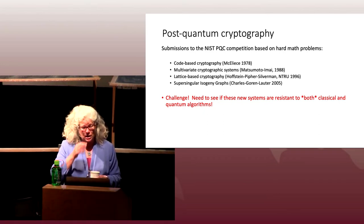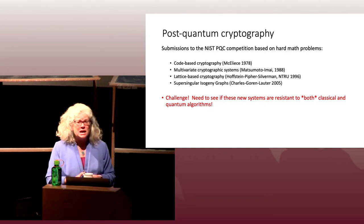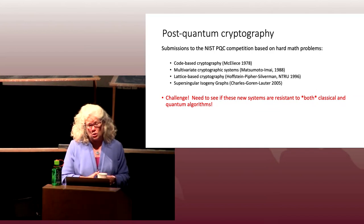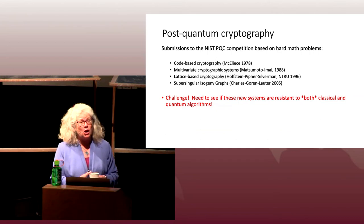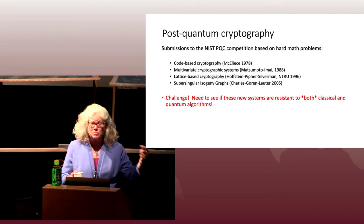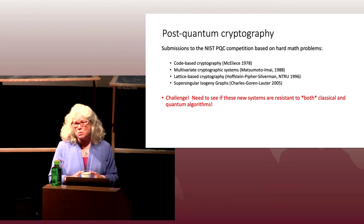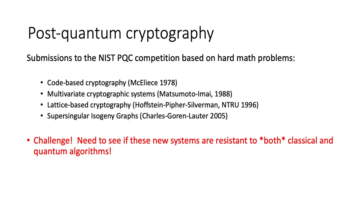One area considered very favorably was code-based cryptography, proposed first in 1978 by McEliece. You can create cryptosystems from error-correcting codes; the security is based on the hardness of decoding random linear codes — analogous to factoring being hard for RSA. There's an extra assumption as well: that you can disguise structured linear codes as random linear codes in a way that nobody can figure out the structure, because you need that structure to decrypt with the secret key.